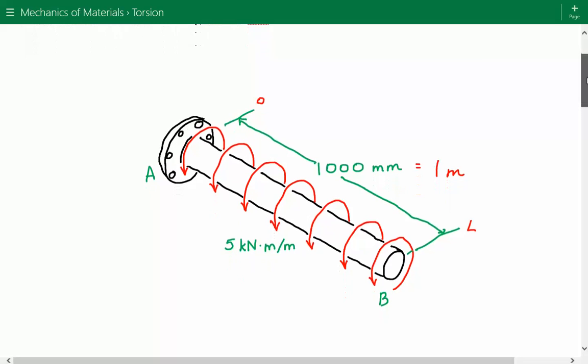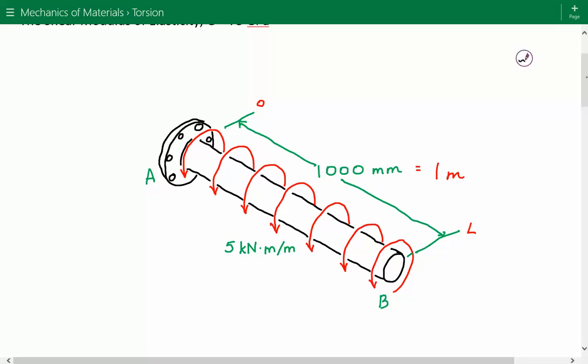Here's our A-36 steel shaft. It has a total length of 1,000 millimeters or 1 meter and is subjected to a uniform distributed torque equal to 5 kilonewton-meters per meter. We need to find the angle of twist of B with respect to A.